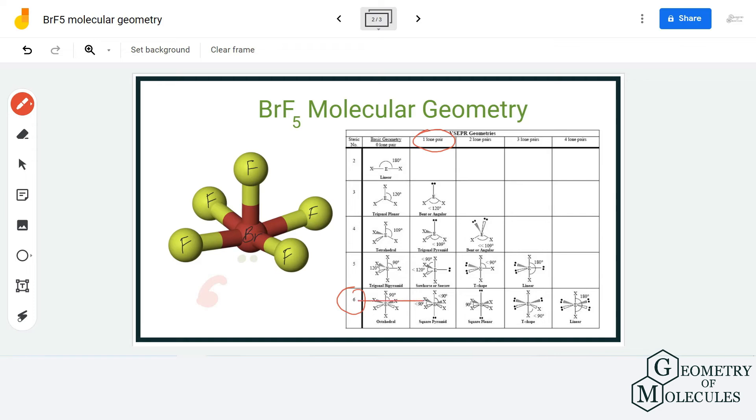And hence, using this steric number or using AXE notation, you can find out the molecular geometry for this molecule. The AXE notation for BRF5 would be AX5E1, because there are five atoms of fluorine that are forming bonds with bromine atom, and there is one lone pair on this bromine atom.